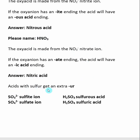The acids with sulfur get an extra 'ur' — this is just an exception to the rule. So if I take the sulfite ion and turn it into an acid, I know it has a minus two charge, so I will have to add two H+ to make the overall acid neutral. That's why there are two hydrogens. If I turn the sulfite ion into an acid, it would be sulfurous acid. Same thing for the sulfate anion — I need to add two hydrogens. It will turn into an 'ic acid' ending, but we have the extra 'ur'. So if I turn the sulfate ion into an acid, it would be H2SO4, or sulfuric acid.